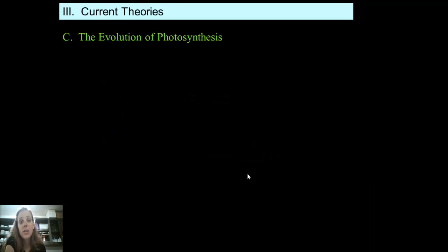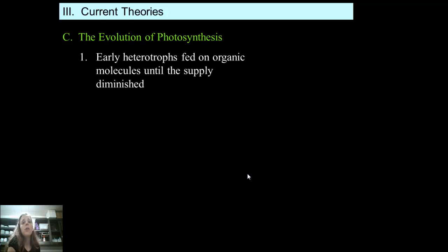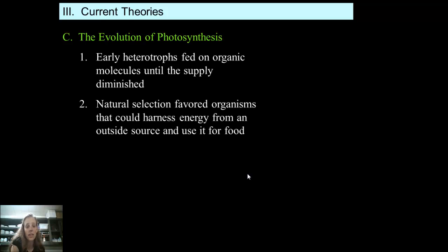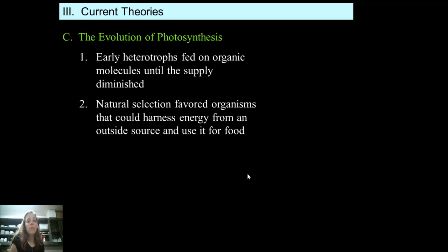Next on the stage is photosynthesis. Early heterotrophs fed on organic molecules until that supply of organic molecules diminished. Natural selection was favoring organisms that could harness energy from an outside source and use it as food — cells that could make their own food through photosynthesis, which is a very efficient way of obtaining energy.